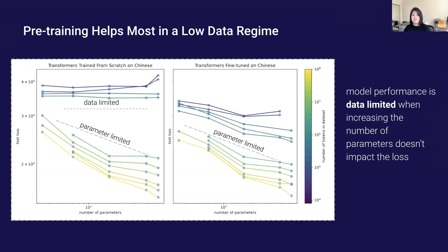Pre-training helps most in low data regimes, especially at smaller model sizes. As I increased the model size with a fixed Chinese dataset size, models trained from scratch on Chinese did not improve, while models pre-trained on English continued to achieve better performance. The flat lines indicate where we are data-limited, versus where we start to see an increase in slope, meaning we are now parameter-limited.